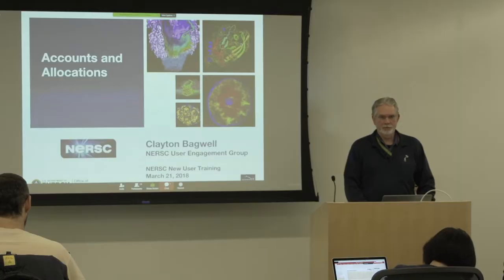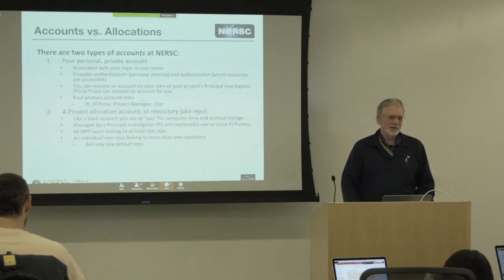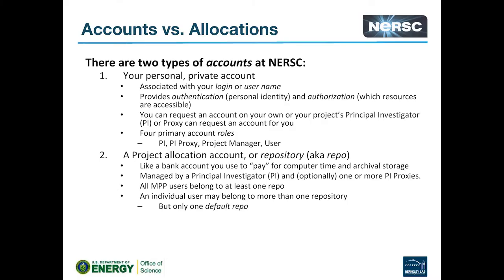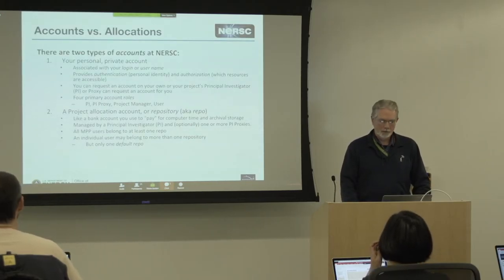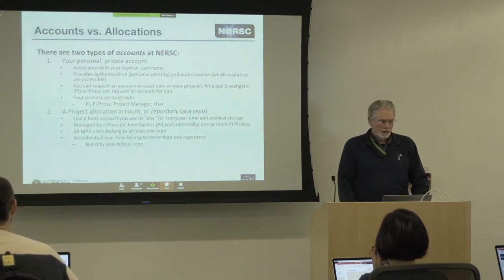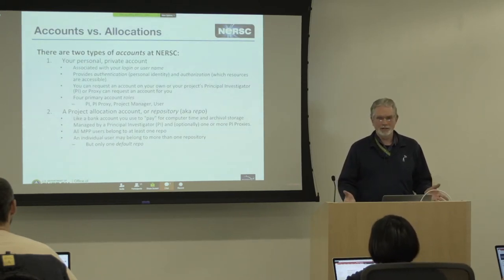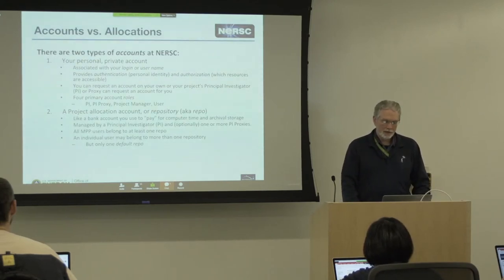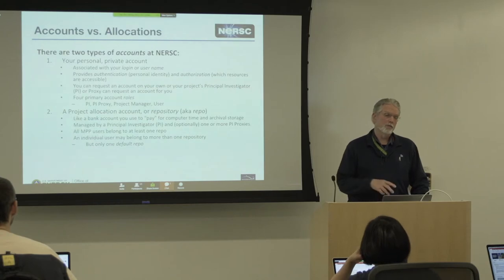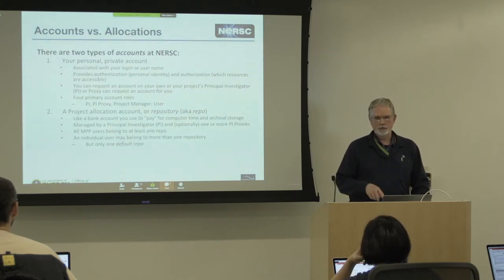There are two types of accounts at NERSC. There's a personal account — that's basically your username or login name. This provides your identity with NERSC and also your authorization, what you're allowed to access. You can request an account on your own using our new user account request form, or the principal investigator or one of their proxies can request an account for you. If you want to work with multiple projects and you already have a NERSC account, the PI or their proxy would add you to their project.